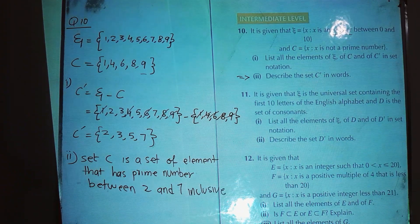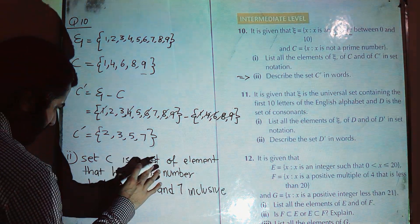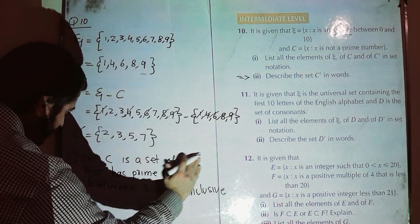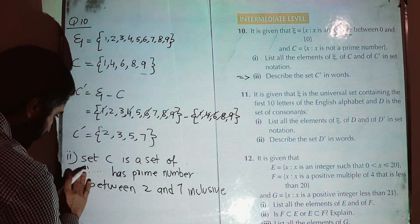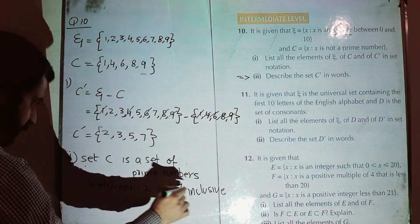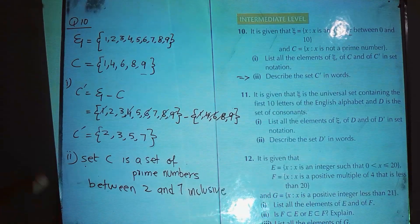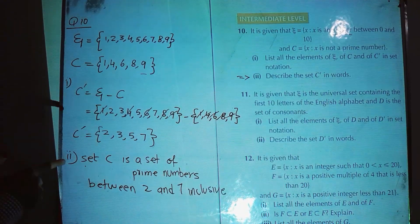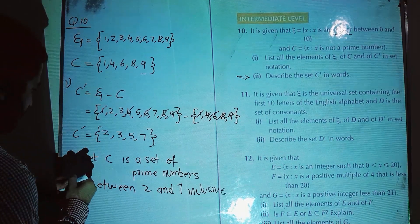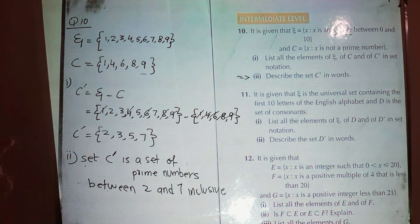Just to clarify: set C complement is a set of prime numbers between 2 and 7 inclusive. That looks much better.